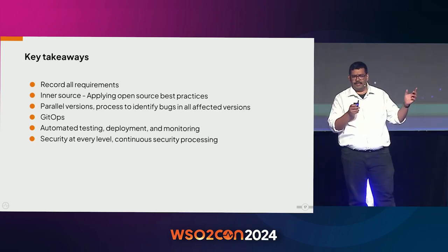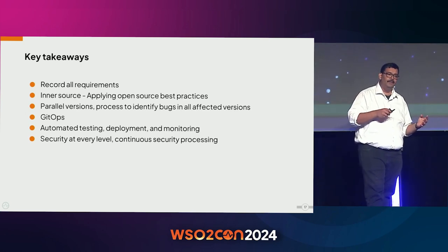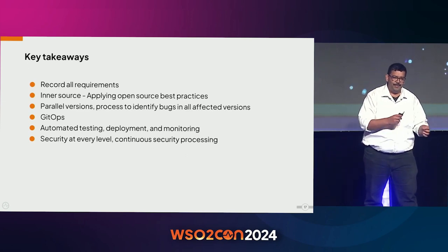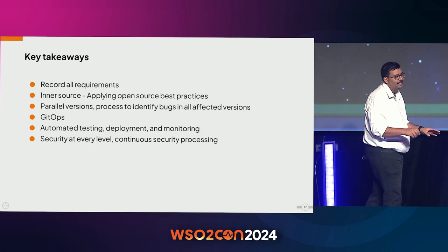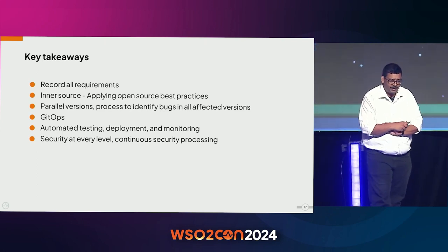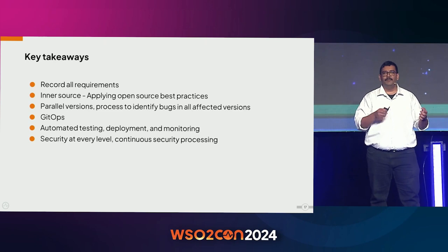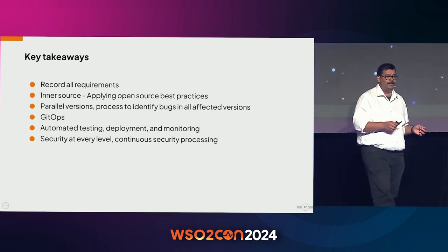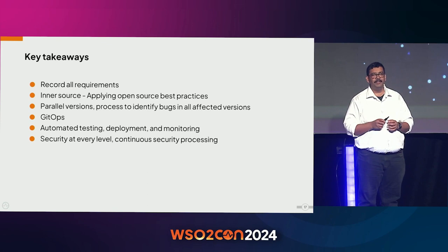Second, apply inner source — applying open source processes and methodology in a closed-source environment. The idea is that the more eyes you have in your design and development process, the more solid the software will be. Inner source helps bring more people into the process for broader participation. Third, you need to support parallel versions. Even in cloud systems, due to backward compatibility, you may need to support multiple versions of a service. Plan for a process of identifying bugs and fixing them across those versions.